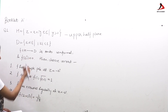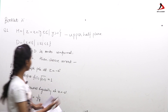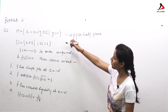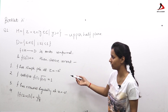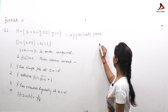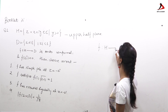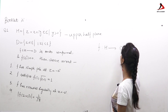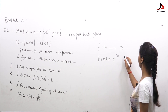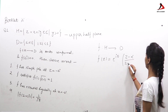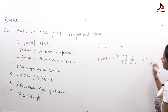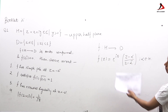In conformal mapping we have a ready-made function which maps the upper half plane to the unit disk. It is a one-to-one onto mapping. The function is f(z) = e^(iθ) · (z − α)/(z − ᾱ), where α belongs to the upper half plane.